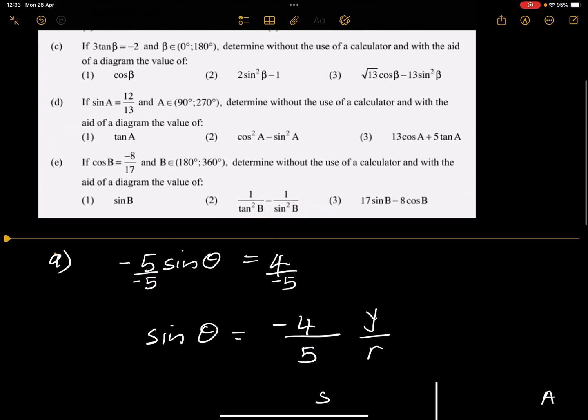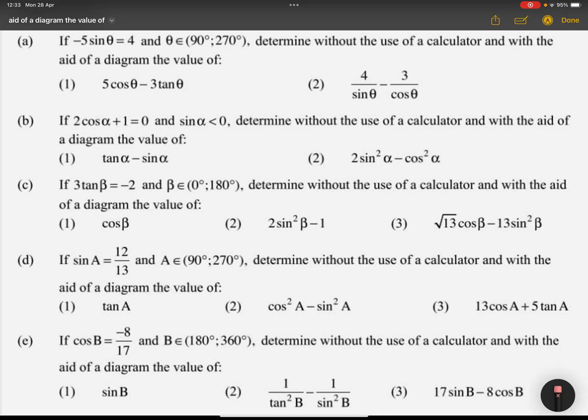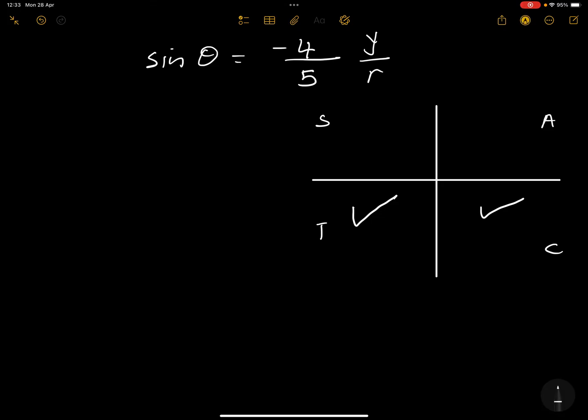Now they gave us a restriction. They said that theta must be an element between 90 and 270 degrees. So an angle between 90 and 270, in this case it must be between the second as well as the third quadrant where we've got two ticks. That's where we're going to draw our triangle. So this means that we've got our triangle right here. Let's try and find out who's who in the zoo. We know that this is y, so y is negative 4, and our r value is 5. Now we need to find out what the x value is.